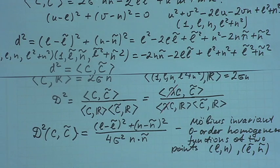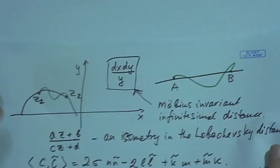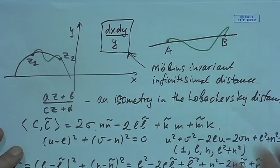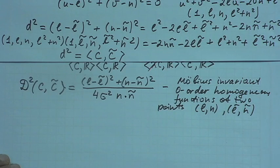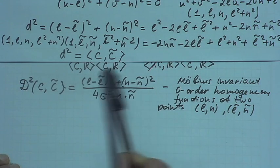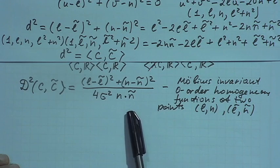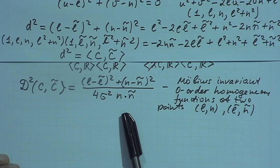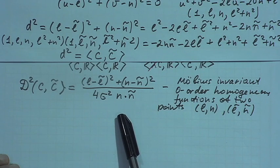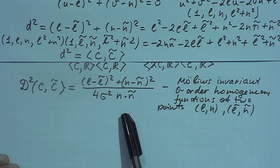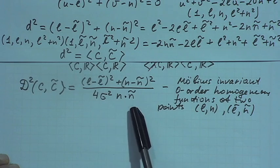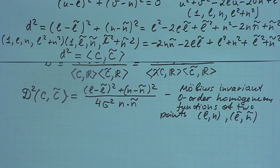We have this expression — any function of it delivers a certain invariant distance. So if you take a non-decreasing function F, you take any non-decreasing function F and do the superposition of this expression with F, obtaining a distance in the upper half plane. The question is: what will be the corresponding straight lines?